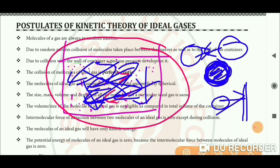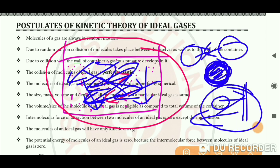This random motion will change direction upon collision, and force per unit area gives us pressure. The collisions lead to a change in momentum which results in pressure being developed.